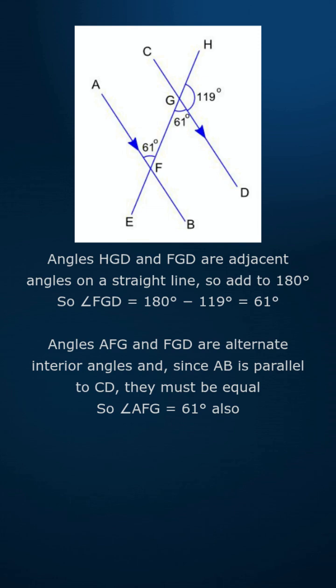Angles AFG and FGD are alternate interior angles, and since AB is parallel to CD, they must be equal. So angle AFG equals 61 degrees also.